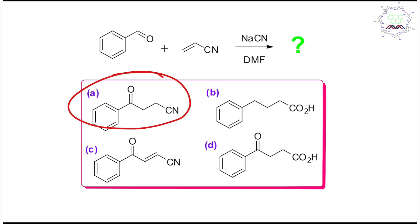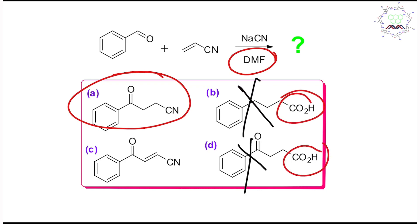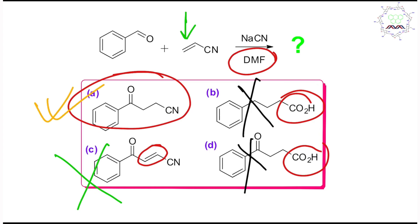If this question appears in your exam, how can you solve it in under 30 seconds using common sense? I provided sodium cyanide as nucleophile and DMF as solvent — no acid, base, or heat was provided. So how would a carboxyl group be produced? Not possible — options B and D are eliminated. For option C, the double bond remains intact, but retaining a double bond requires palladium-catalyzed or oxidizing conditions, which were not provided. So option C is also eliminated — what is left is option A.